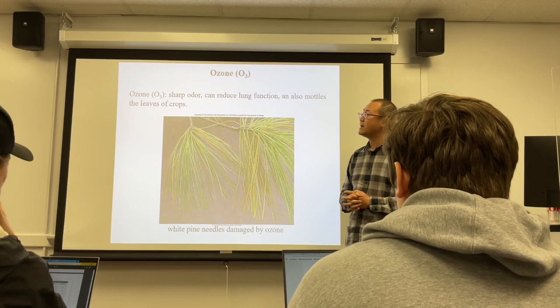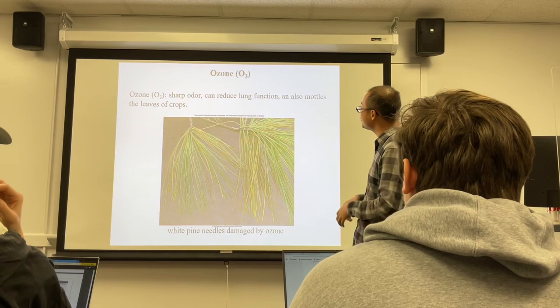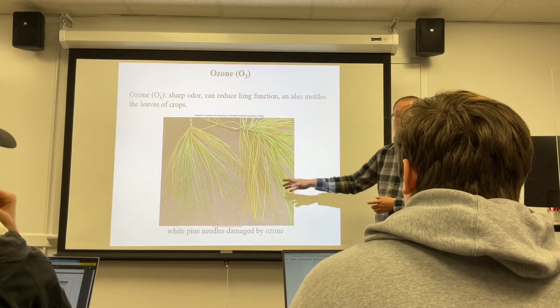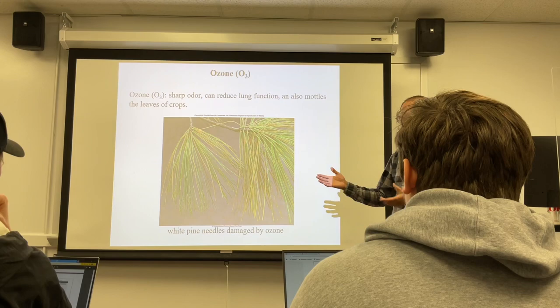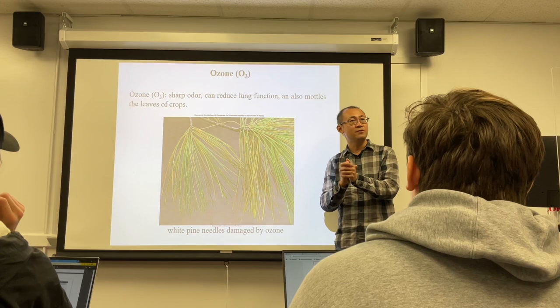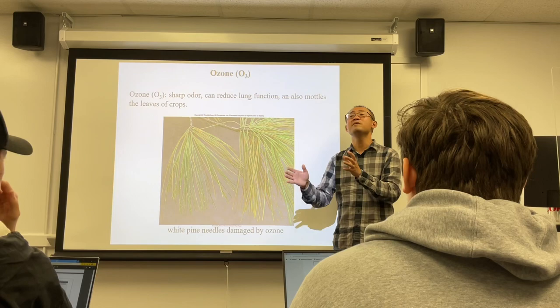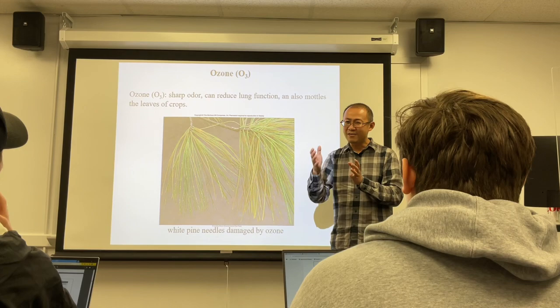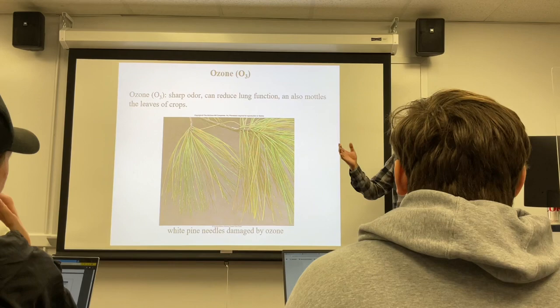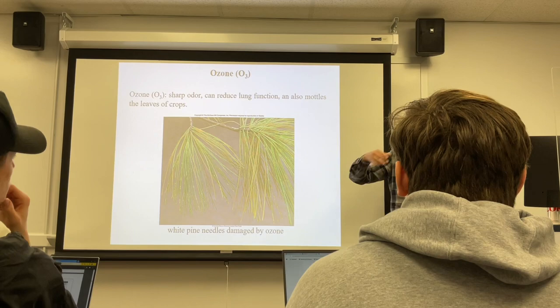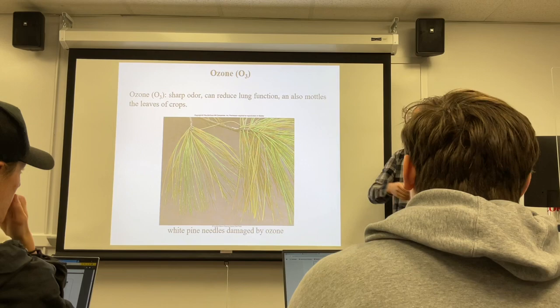The second bad gas is ozone, formula O₃. It does have a sharp odor. It can reduce lung function and also mottle the leaves of crops. You may have experienced a weird sharp odor near a Xerox machine — that's ozone, because the laser light in the machine activates generation of ozone.